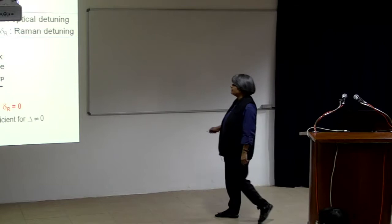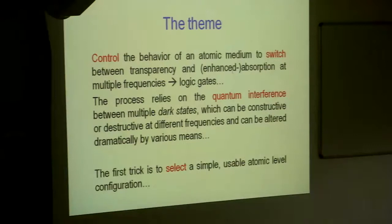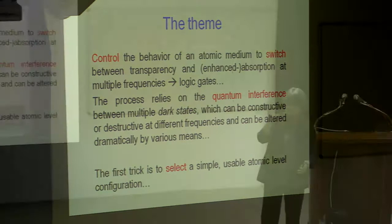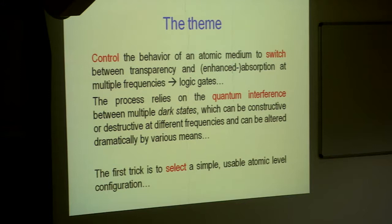The general EIT scheme is, as I said, is a lambda system like that. The idea is that can I switch, it is like a switch that turns things dark and light, dark and bright. We can actually do many mixing of that, switch between transparency and absorption at multiple frequency, create logic gates and so, because it depends on quantum interference effects, it could be constructive or destructive at different frequencies. To do an experiment of course, the first trick is to select a simple usable atomic level configuration.